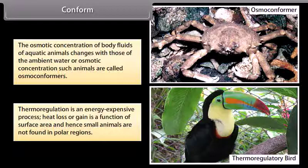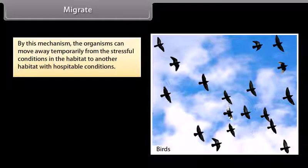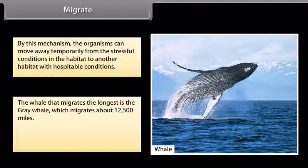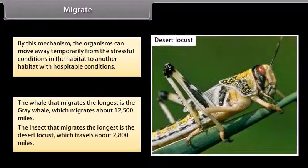Migrate: By this mechanism, organisms can move away temporarily from stressful conditions in their habitat to another habitat with hospitable conditions. The whale that migrates the longest is the gray whale, which migrates about 12,500 miles. The insect that migrates the longest is the desert locust, which travels about 2,800 miles.